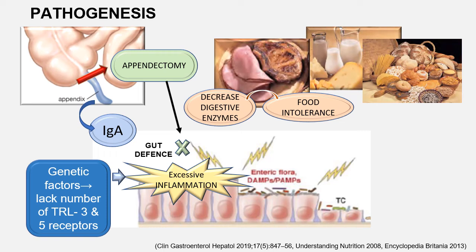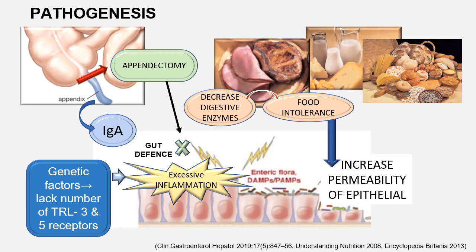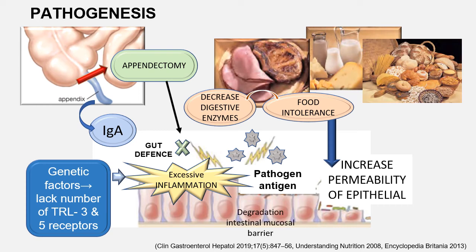Intolerance to gluten and yeast leads to increased epithelial permeability, resulting in increased penetration of pathogenic antigens causing inflammation and degradation of the intestinal mucosal barrier. An increased permeability of the epithelial layer allows pathogens to enter the less resistant lower mucosa, triggering the activity of antigen receptors in the submucosa and initiating the inflammatory cascade.